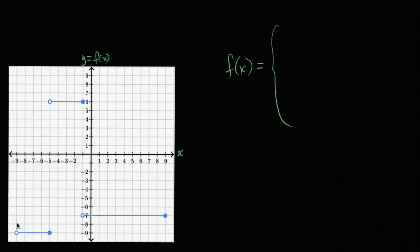This first interval is from not including negative 9 — I have an open circle here, not a closed-in circle — so x is greater than negative 9, all the way up to and including negative 5. We can write that as negative 9 is less than x, less than or equal to negative 5. The value of the function over this interval is a constant negative 9.